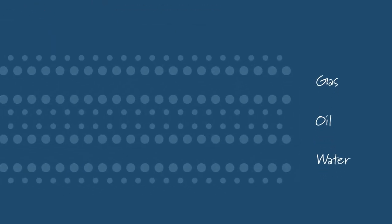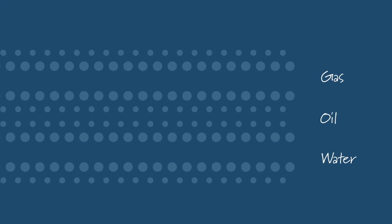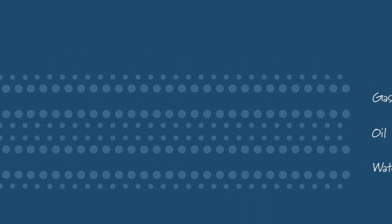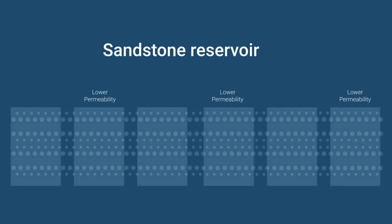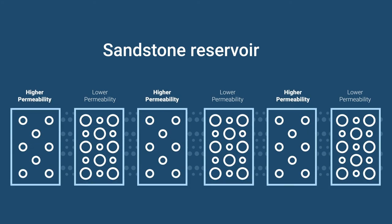A reservoir is comprised of fluid-filled porous rock formations, normally in the form of either sandstone or carbonate. Sandstone reservoirs are typically quite heterogeneous, meaning that there are different variations of permeability along the horizontal section.